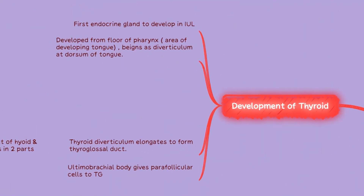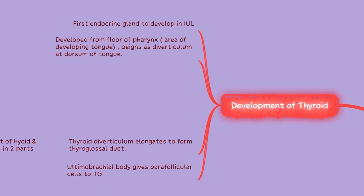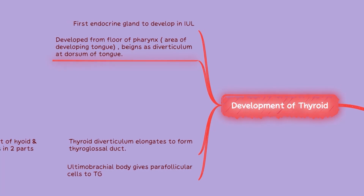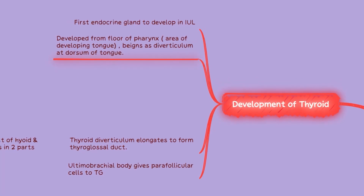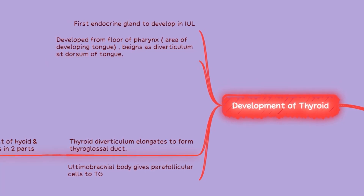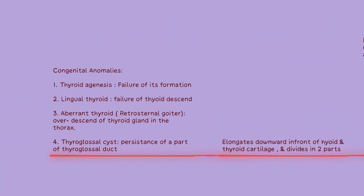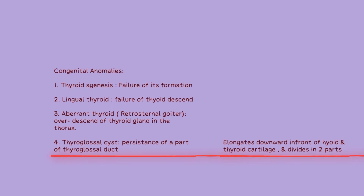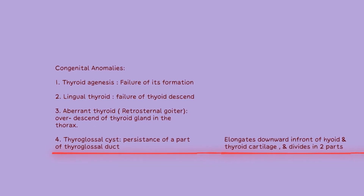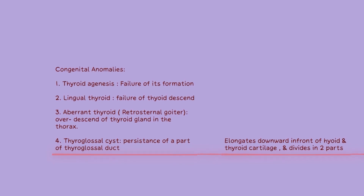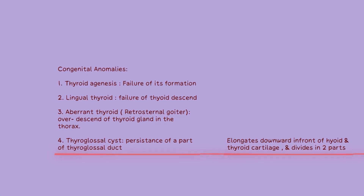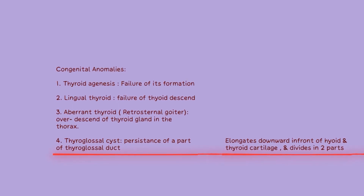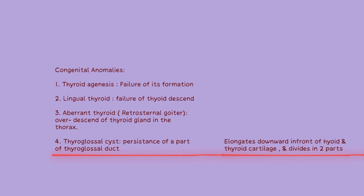Now we will quickly go over the development of the thyroid. The thyroid gland is the first endocrine gland to develop in intrauterine life. It arises from the floor of the pharynx as a diverticulum from the dorsum of the tongue. The thyroid diverticulum elongates to form the thyroglossal duct, which further elongates and divides into two parts, contributing to the development of the thyroid gland. The ultimobranchial body contributes to the development of parafollicular cells present in the gland. Various congenital anomalies can occur during development, including thyroid agenesis, lingual thyroid, aberrant thyroid and thyroglossal cyst.